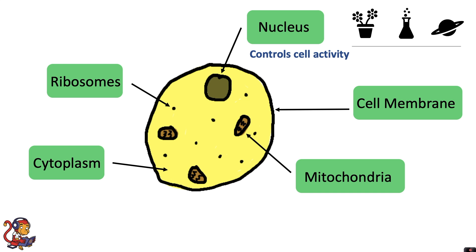So the nucleus controls cell activity and it is also where the genetic information is stored. The cell membrane controls what goes in and out of the cell.